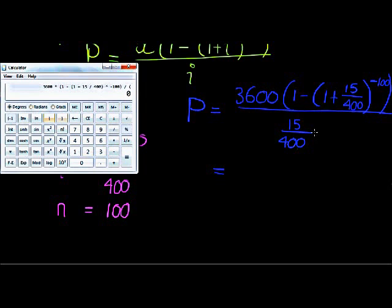And here's the important part: the negative. Close that bracket, divided by... and just since the denominator is a fraction, let's keep that fraction in a bracket: 15 over 400, and close that bracket.